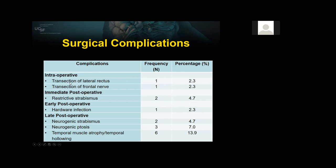Intraoperative complications included transection of the lateral rectus and transection of the frontal nerve — both in the same patient. I was using the Midas Rex drill to drill down tumor-involved bone in the region of the pterion; the resident moved his retractor, the shaft of the drill caught on a cottonoid, which pulled the string across the roof and lateral aspect of the orbit and cut everything in its path. We brought in the microscope and re-approximated the supraorbital nerve, superior rectus, levator, and lateral rectus. The patient had almost complete ptosis for about 12 months but eventually recovered amazingly well.